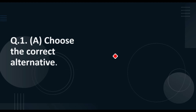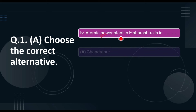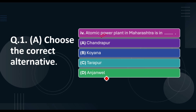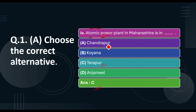Question four from the 'Towards Green Energy' topic: An atomic power plant in Maharashtra is located in which area? Options are Chandrapur, Koyna, Tarapur, or Anjan. The correct answer is option C, Tarapur — where electricity is produced using nuclear energy in a nuclear power plant, also called an atomic power plant.